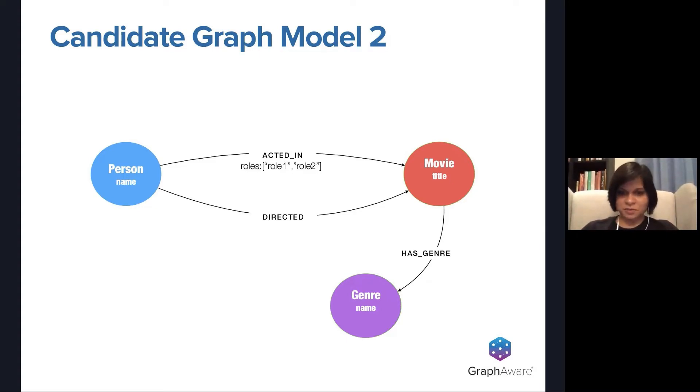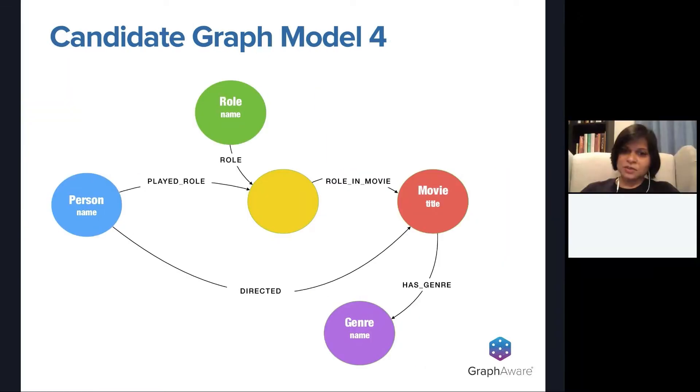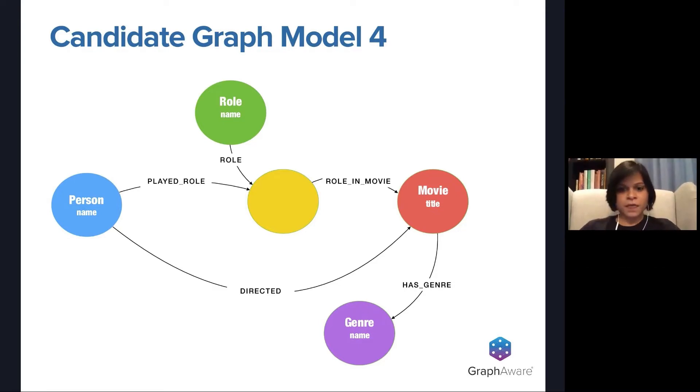Person number two has decided to take a completely different approach and has decided to make the genre a node and relate it to the movie via the has genre relationship. So is this model better than the first one? Again, this is impossible to tell because you don't really know what purpose this graph model is serving. If you hand this to yet another person, they could come up with this where genre isn't a node here, but now it's a label on the movie node. Again, is this better than the first one or the second one? We have no idea.